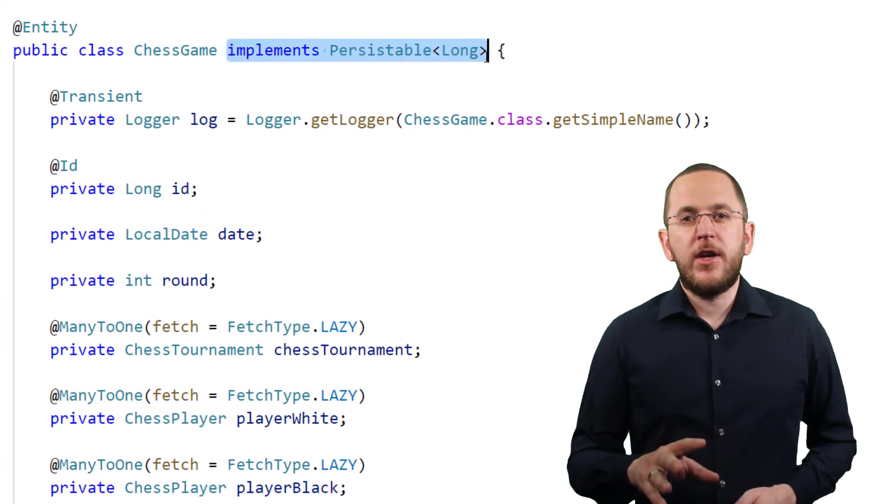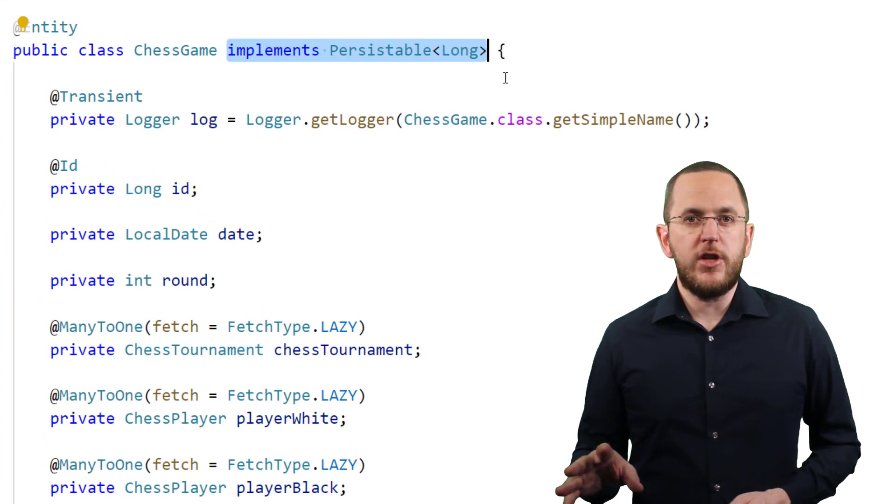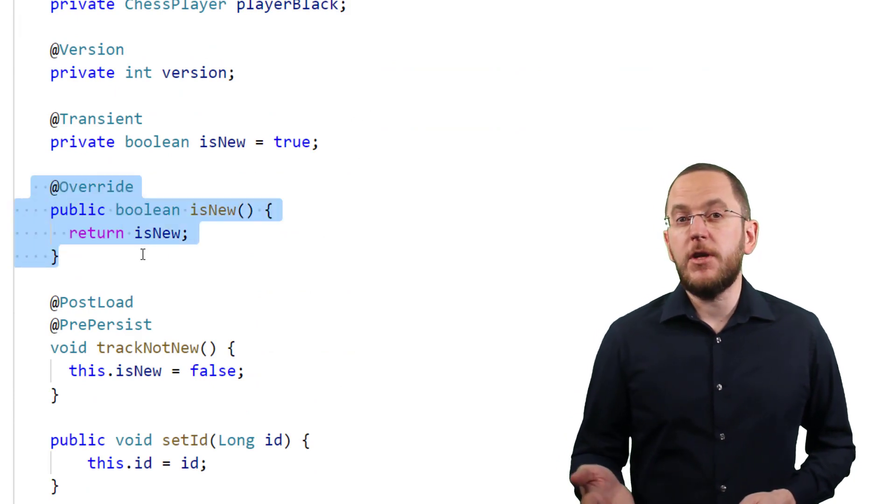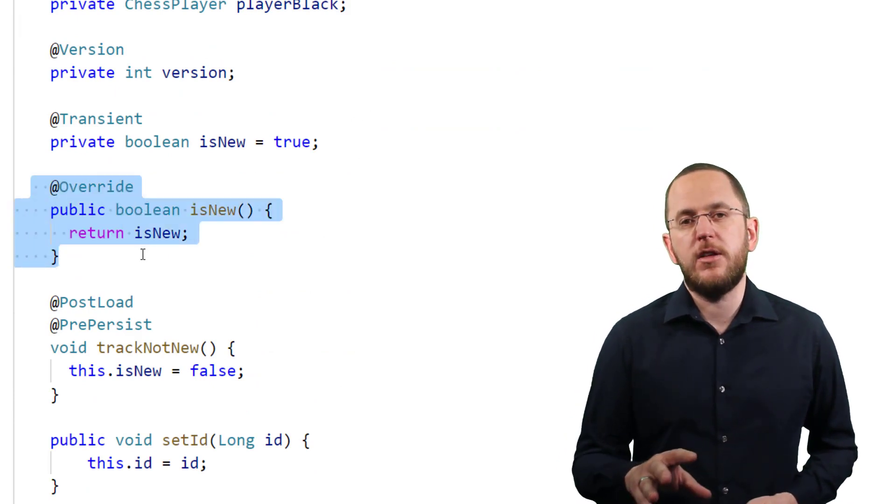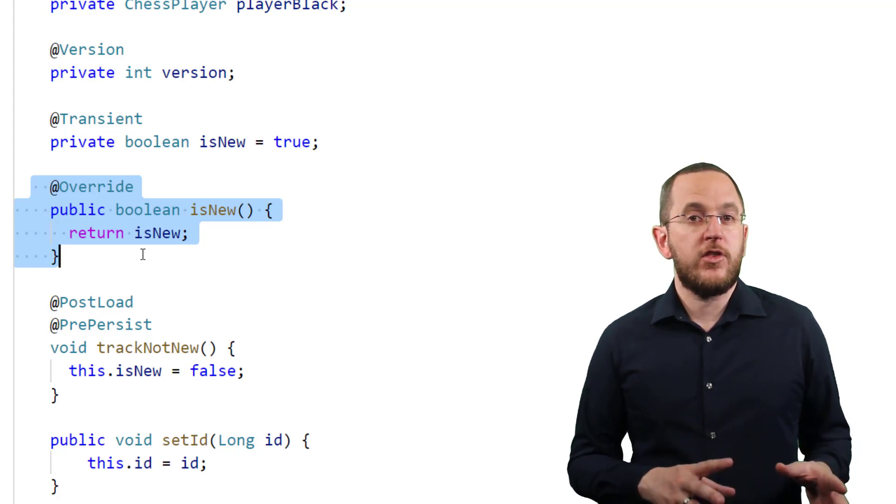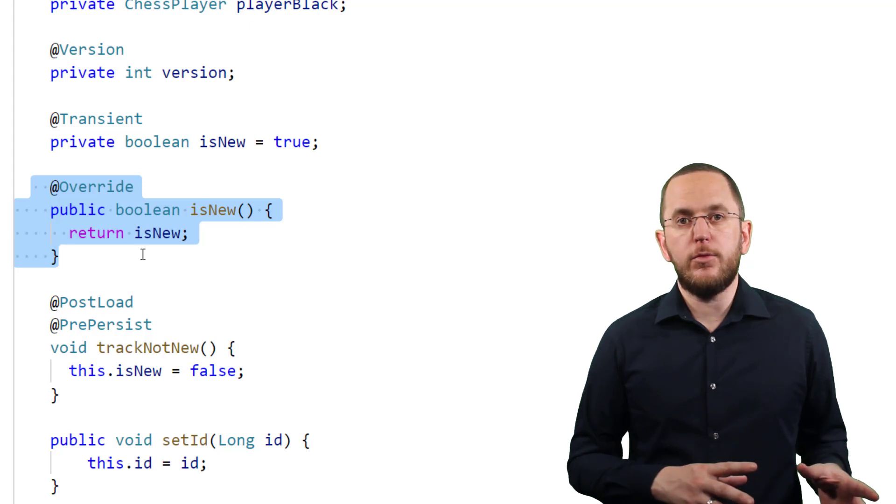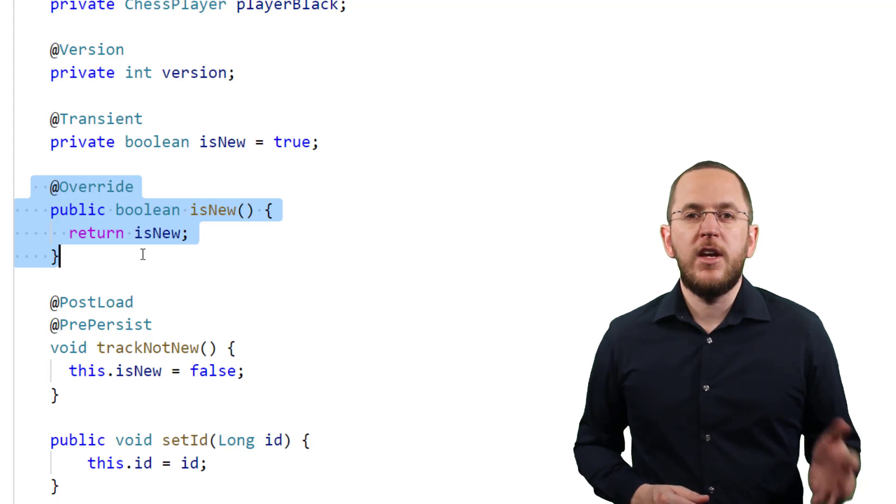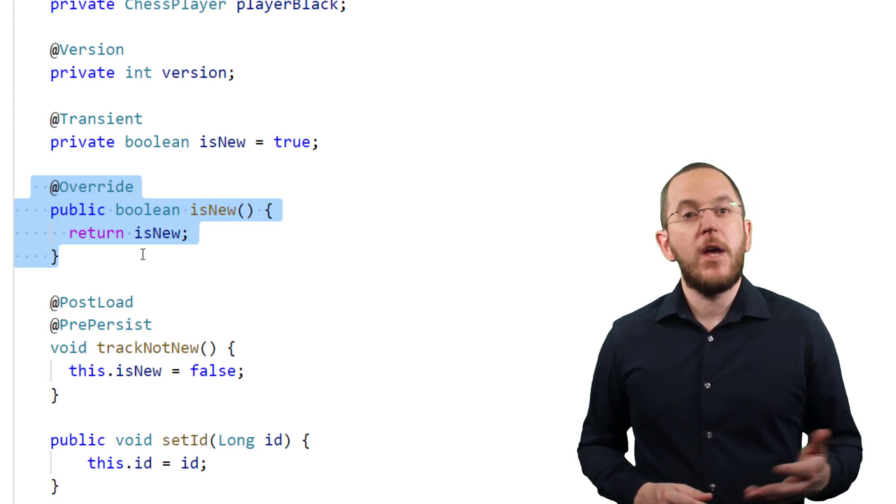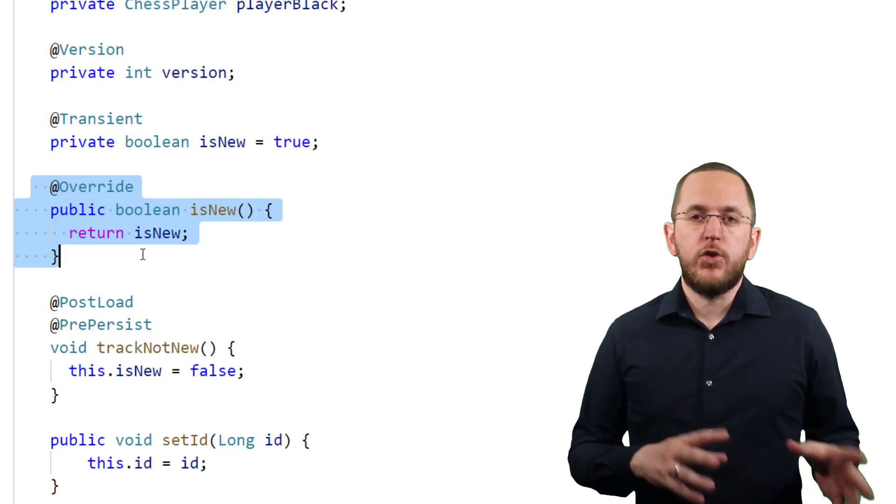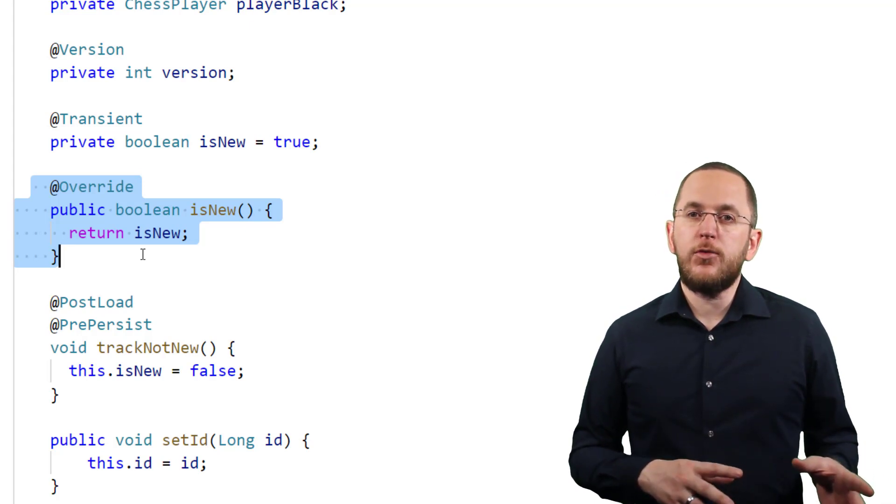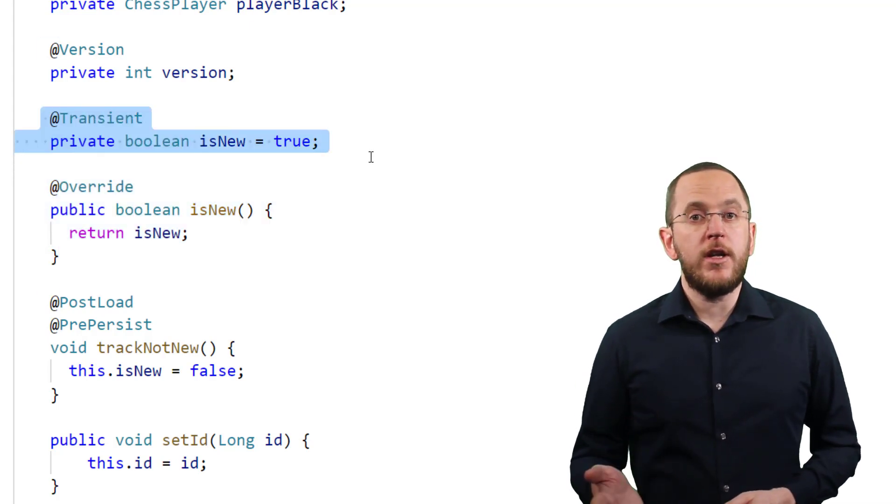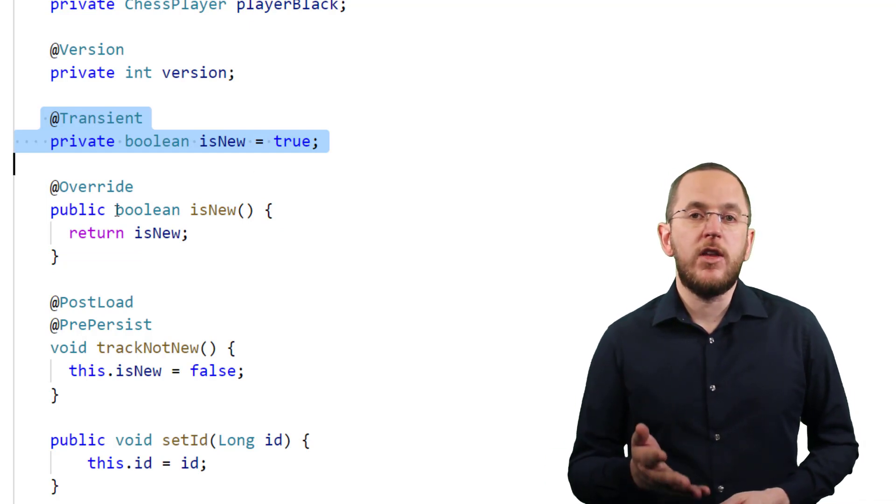The persistable interface provides a simple option to customize the state detection algorithm used for a specific entity class. It defines the isNew method which Spring Data JPA calls to determine the state of an entity object. By implementing that method, you can adjust the detection algorithm to the specific needs of your domain model. The code snippet you can see here shows an implementation commonly used with entity classes that use a programmatically assigned primary key and no version attribute. As explained in the previous section, Spring Data JPA's default detection algorithm can't handle these entities. In that case, you can use a transient boolean attribute to track the entity state and return it in the isNew method.